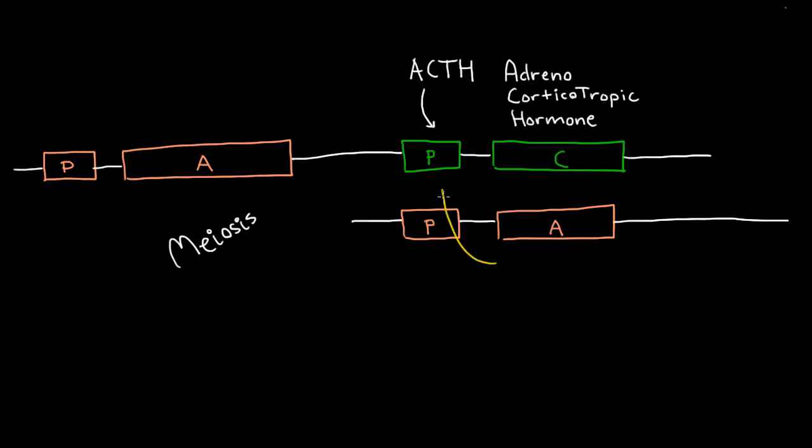So what happens is you get recombination between the cortisol and aldosterone areas such that you end up with the messed up gene where the promoter for cortisol controls the production of the protein which actually makes aldosterone.